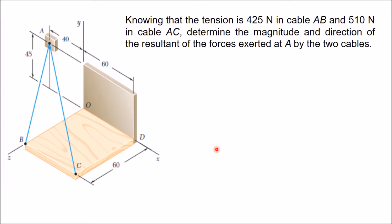The question states that knowing that the tension is 425 N in cable AB and 510 N in cable AC — this is cable AB and this is cable AC — we have to determine the magnitude and direction of the resultant of the forces exerted at point A by the two cables.